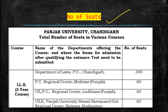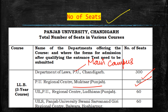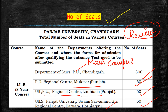Main campus, Department of Laws, PU Chandigarh — main campus has 300 seats. PU Regional Center Muktsar has 60 seats, PU Regional Center Ludhiana has 60 seats, and Hoshiarpur has 60 seats. If you want to know how to opt for regional centers, I have a detailed video — check the link in the description box.